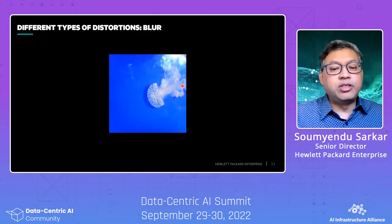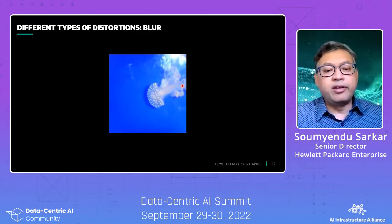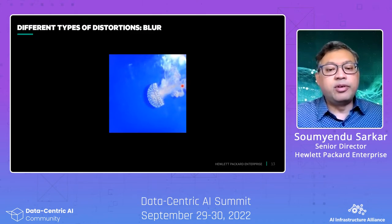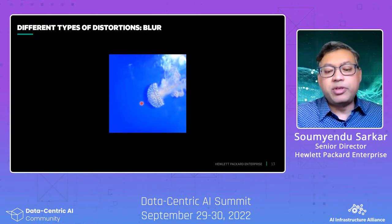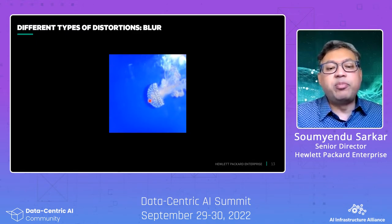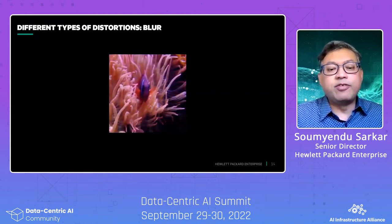We can also do blurs, which is a typical effect of blurring on your image sensor lens. As you can see, there's a tiny blur which appears here. If you look at the original image, it is clear. And this tiny blur at a very vulnerable area of the image can cause it to misclassify.